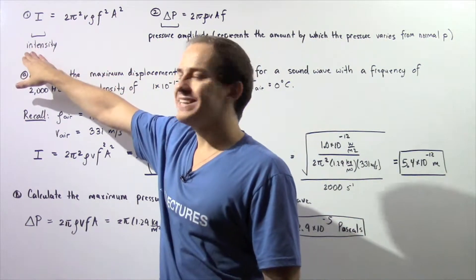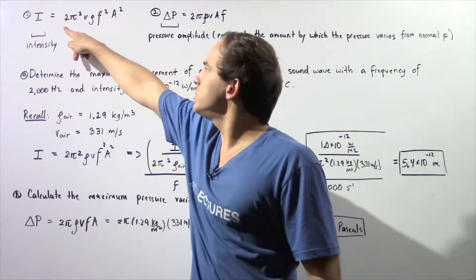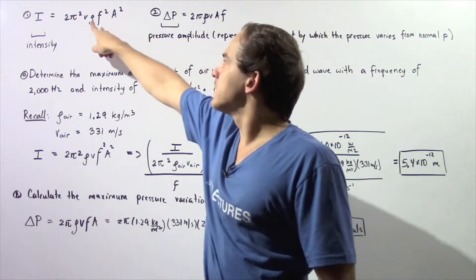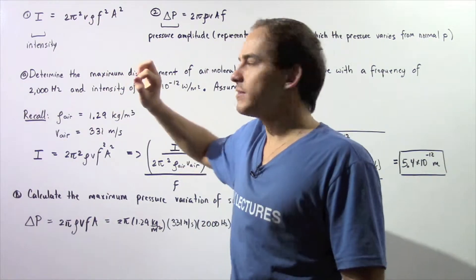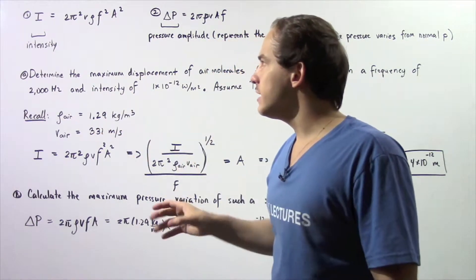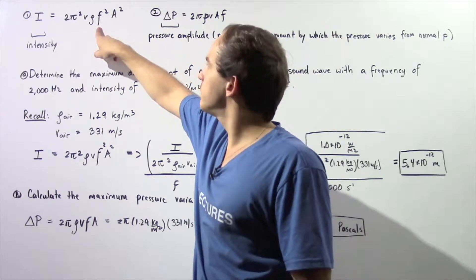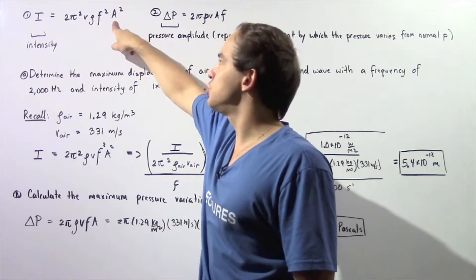Formula number one gives us the intensity of our sound wave. V is the velocity of the sound wave, ρ is the density of the medium through which our mechanical sound wave is traveling, f is the frequency of the sound wave, and A is the amplitude, the maximum displacement of our sound wave.